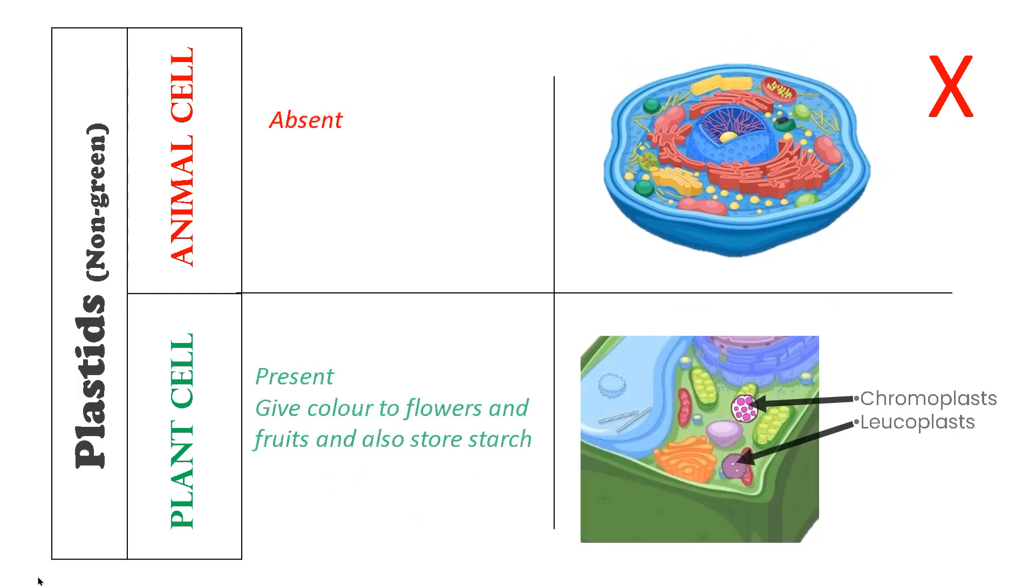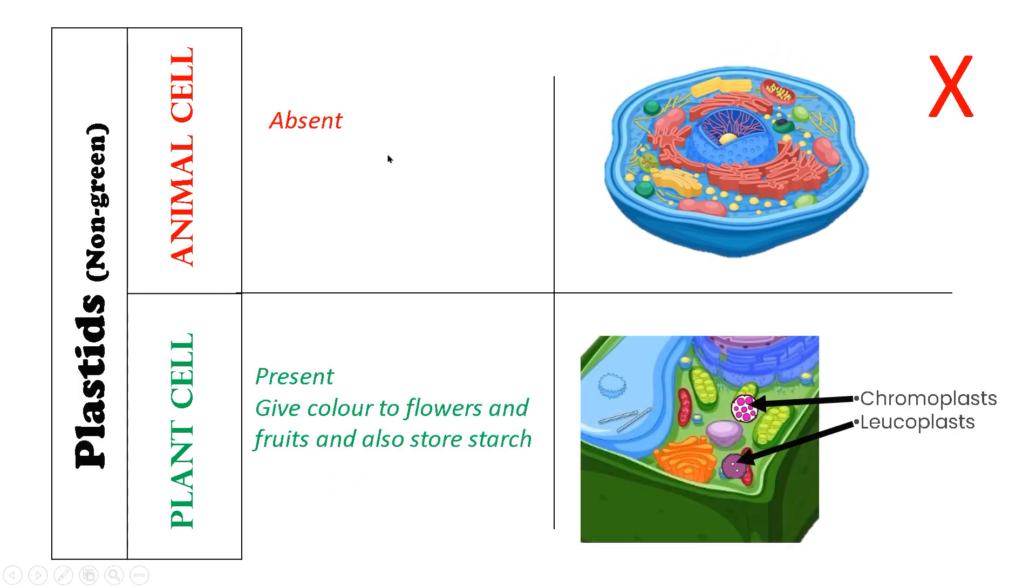The next difference is about non-green plastids. Non-green plastids are also absent in animal cells, whereas a variety of non-green plastids are present in plants like chromoplast and leucoplast, and they give vibrant color to the flowers, fruits, and leaves.